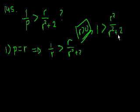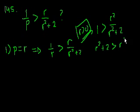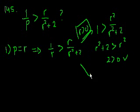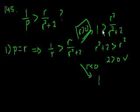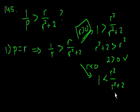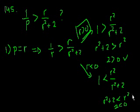If r is greater than 0, then r squared plus 2 is always going to be greater than 0, because r squared is positive. Multiplying both sides by r squared plus 2, you get r squared plus 2 is greater than r squared. Subtracting r squared from both sides, you get 2 is greater than 0, which is true. But if you assume r is less than 0, you have to switch the inequality when multiplying by r, and you eventually get 2 is less than 0, which is false.